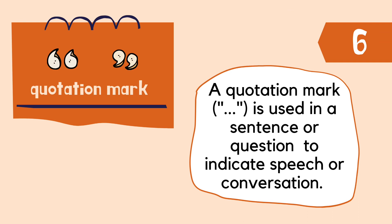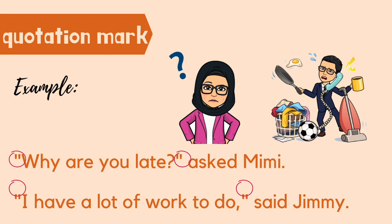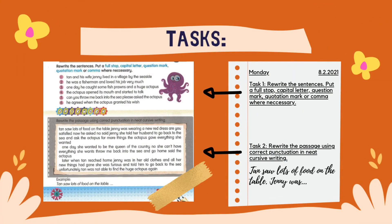Number 6: Quotation mark — Tanda pengikat kata. A quotation mark is used in a sentence or question to indicate speech or conversation. Tanda pengikat kata digunakan di dalam ayat atau soalan untuk menunjukkan ucapan atau perbualan. For example: "Why are you late?" asked Mimi. "I have a lot of work to do," said Jamie.